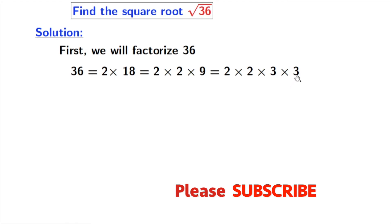Now we will take square root on both sides. Doing that we get square root of 36 is equal to square root of 2 times 2 times 3 times 3.